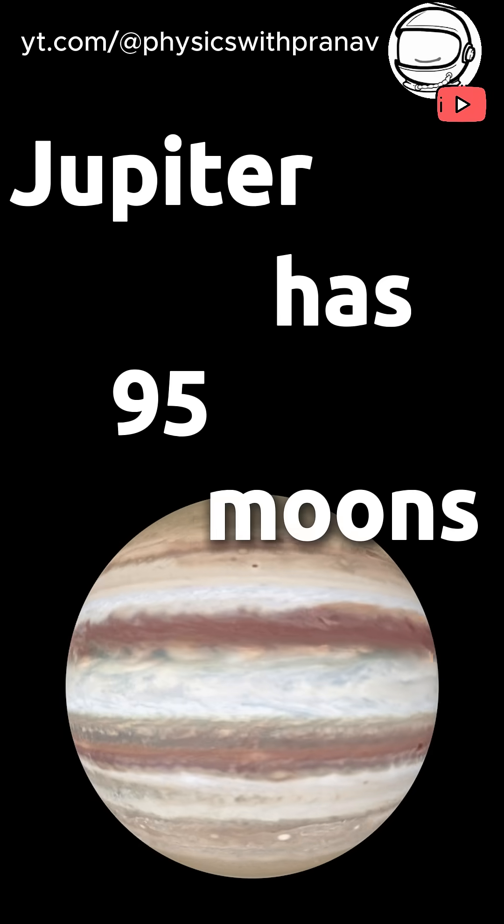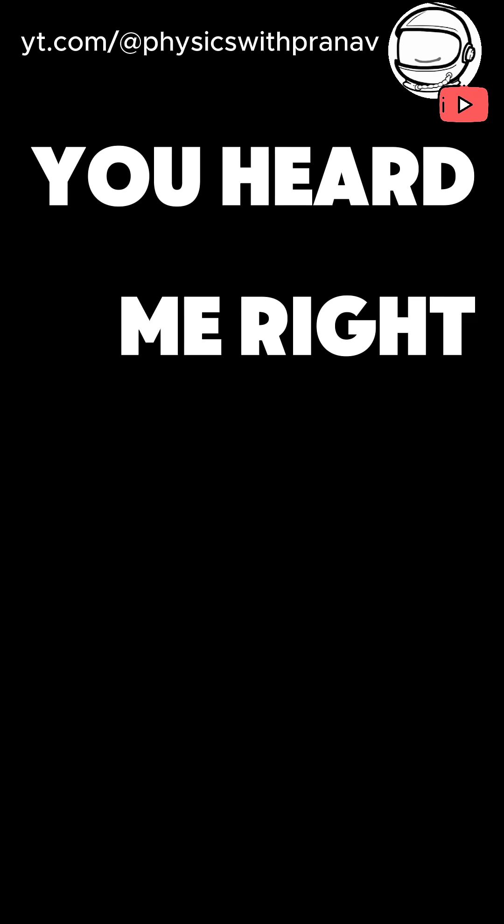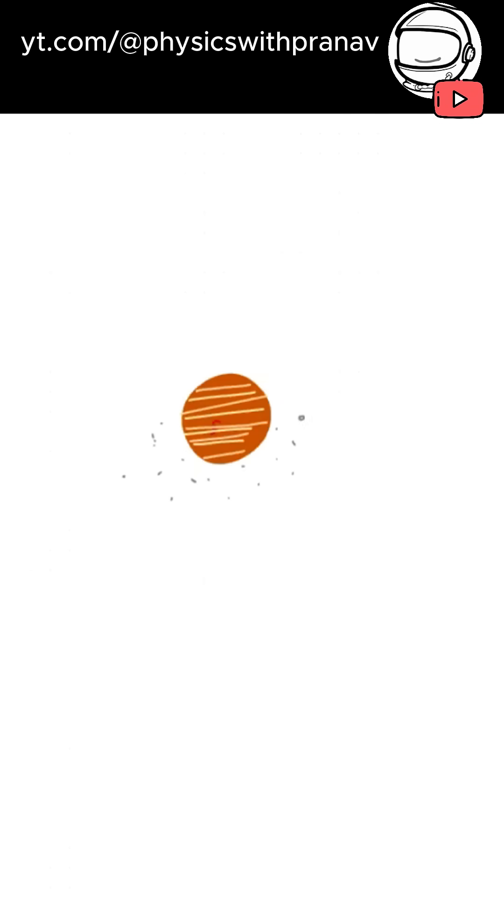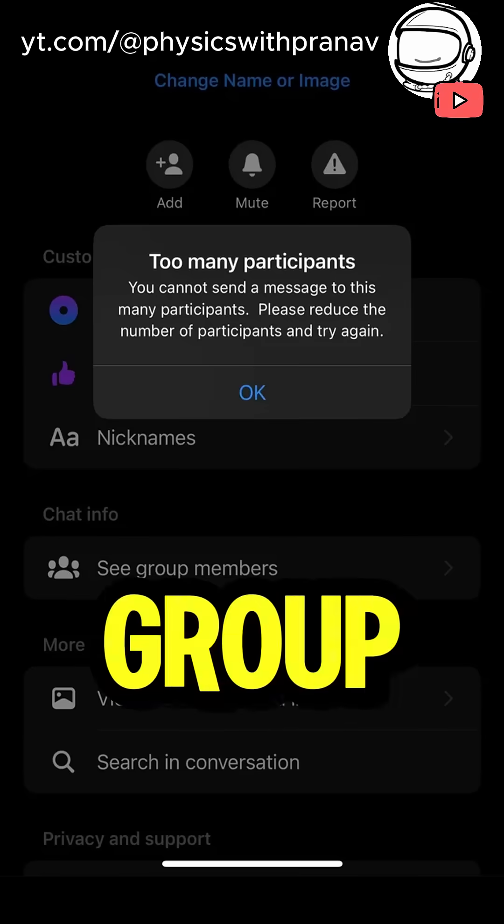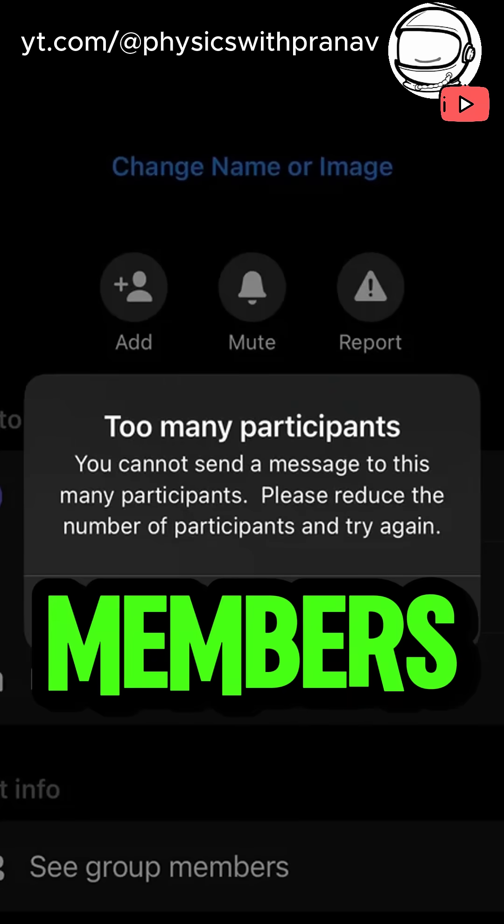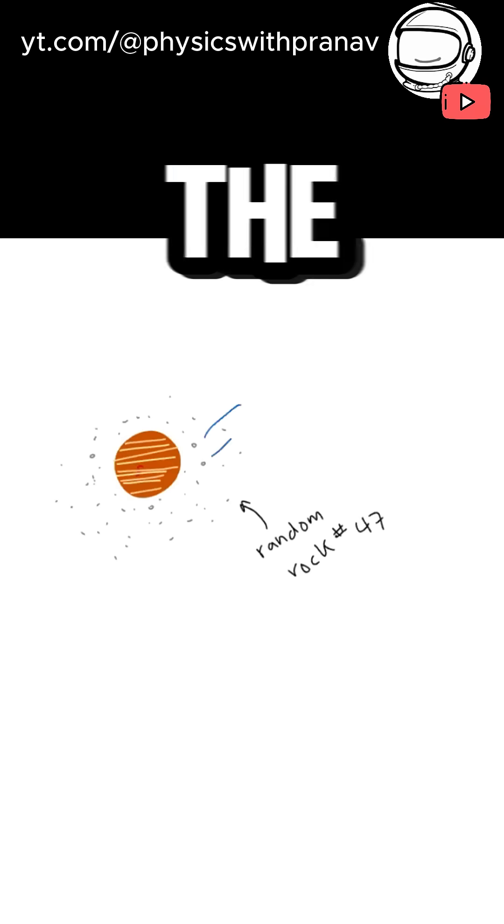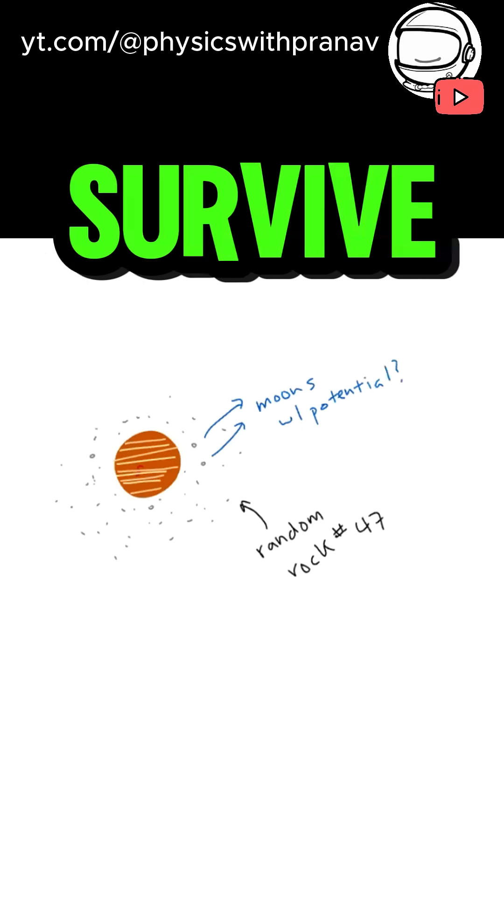Jupiter has 95 moons. Yes, you heard me right, 95. It's like the cosmic version of a group chat with way too many members, and nobody knows who half of them are. But the real question is, can you survive on any of them?